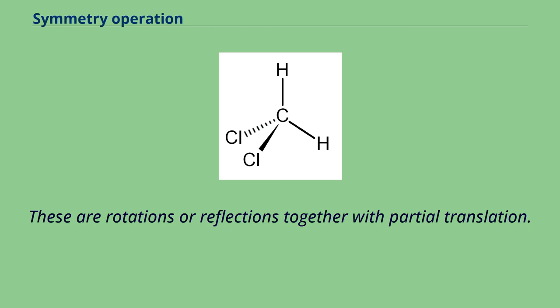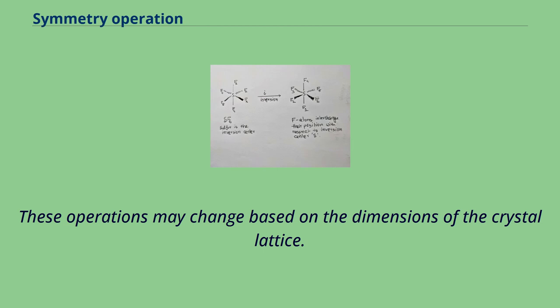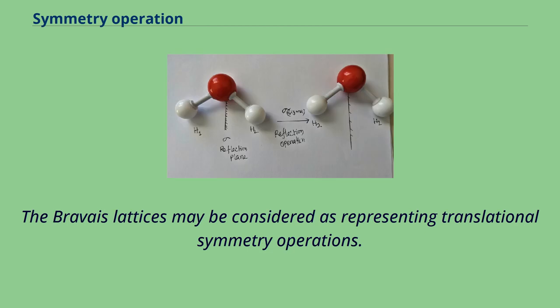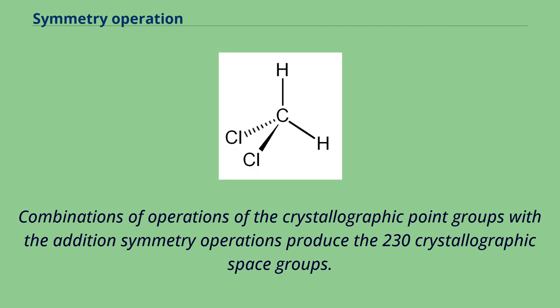These are rotations or reflections together with partial translation. These operations may change based on the dimensions of the crystal lattice. The Bravais lattices may be considered as representing translational symmetry operations. Combinations of operations of the crystallographic point groups with the addition symmetry operations produce the 230 crystallographic space groups.